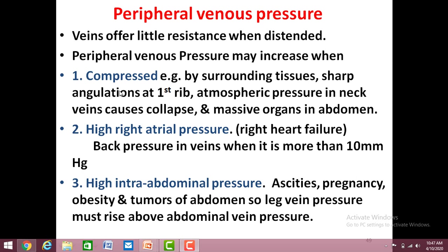One cause is whenever a vein is compressed. The conditions leading to this compression may be that the surrounding tissues are compressing upon the vein, or whenever there is a sharp angulation of a vein — best seen at the level of the first rib when the arm veins enter the thoracic cavity. Atmospheric pressure in the neck veins will cause a collapse because pressure there is usually less than zero.